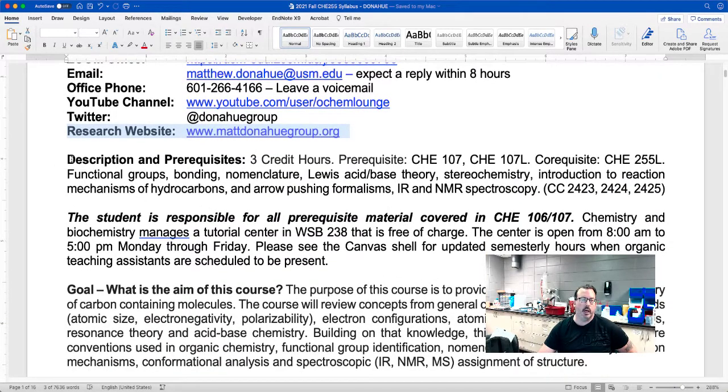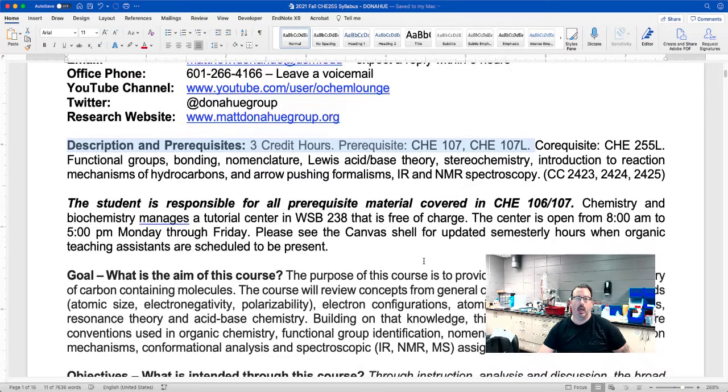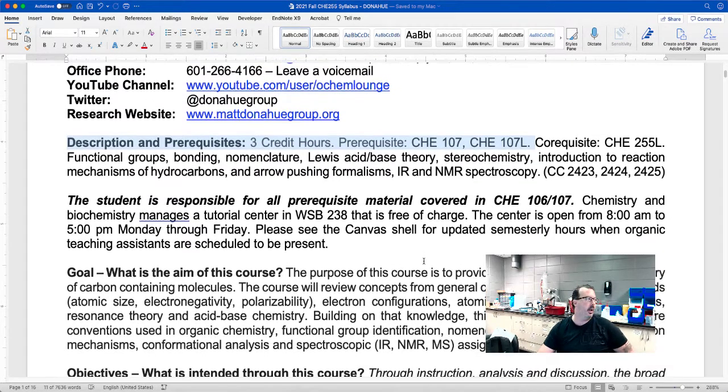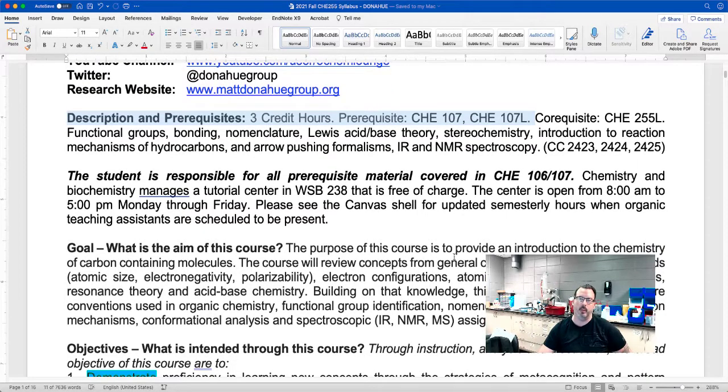So this course is basically three credit hours and you'll need to know the material from chemistry one and two. At USM, that's CHE 106 and 107. If you do need a review on that, the program of chemistry and biochemistry manages a tutorial center in Walker Science 238. So later on within the week of next week sometime, I'll post the schedule where the teaching assistants that specialize in organic when they are in that room so you can align your times with theirs if you need to see them.